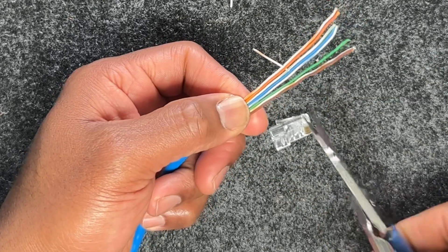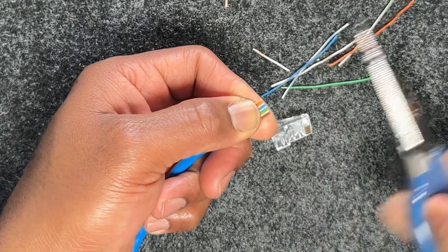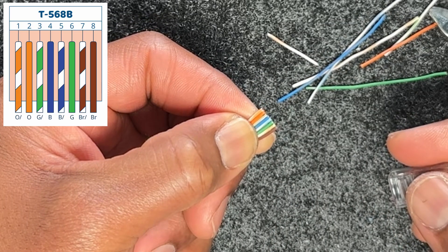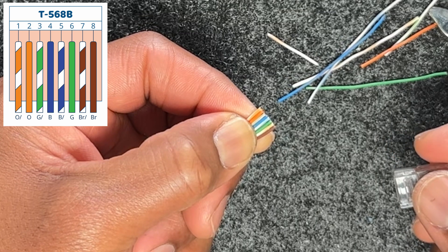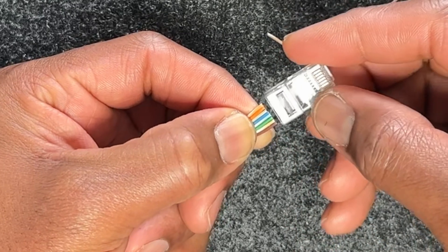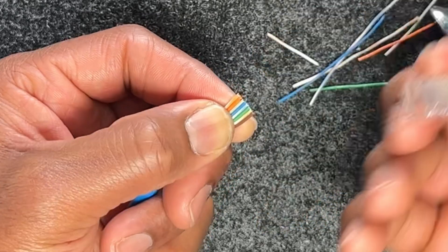I'm going to cut. At this point, this is what I'm going to cut. I'd re-verify: white orange, solid orange, white green, solid blue, white blue, solid green, white brown, solid brown. At this point, pin one is to my left and that's just what I do.